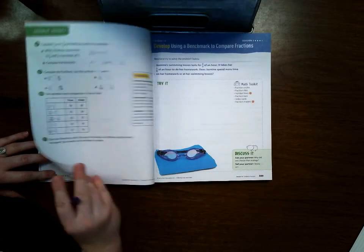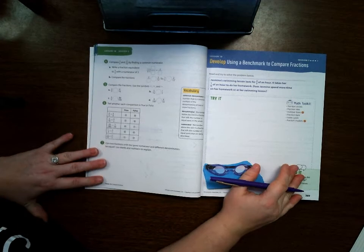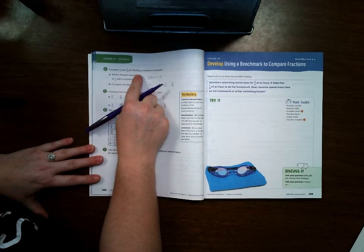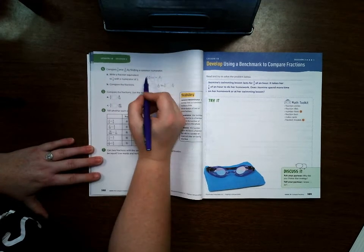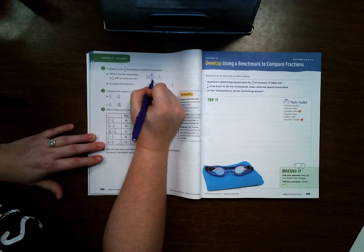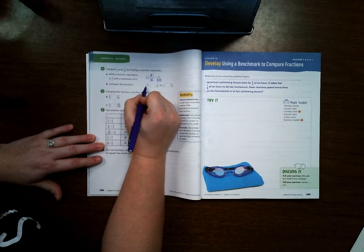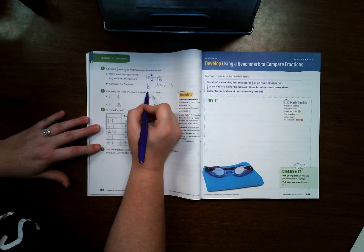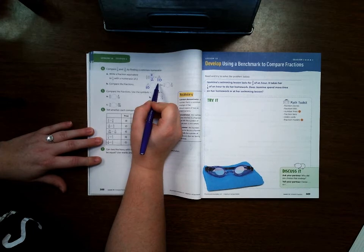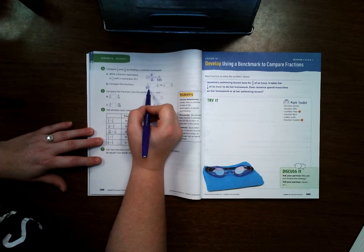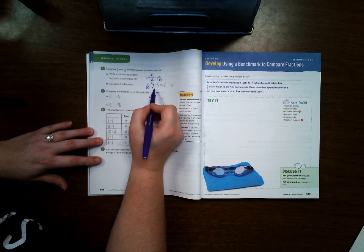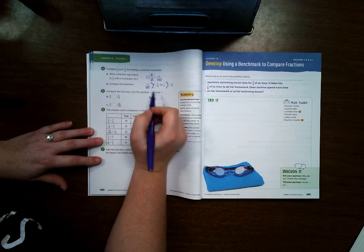Okay, let's go ahead and take a look at page 388. Compare 1/5 and 2/12 by finding a common numerator. So 1/5 and 2/12. We're changing the 1 to a 2 by multiplying by 2. So we get 2/10. And if you remember from our instruction, when they have the same numerator, the one with the smaller denominator is bigger. So that means 2/10 is bigger than 2/12, which means that 1/5 is bigger than 2/12.